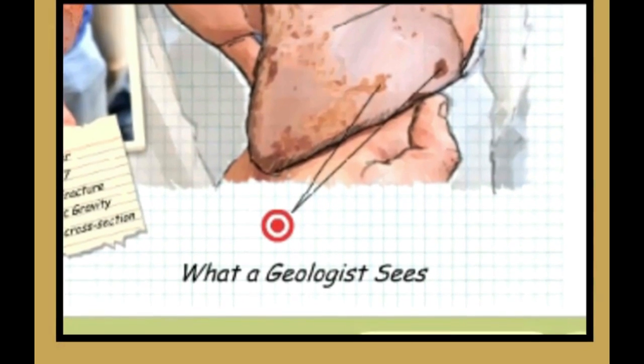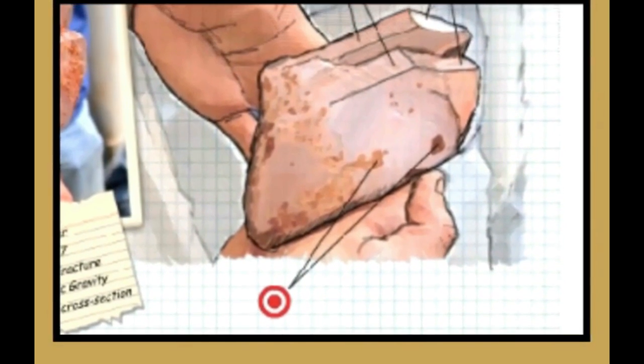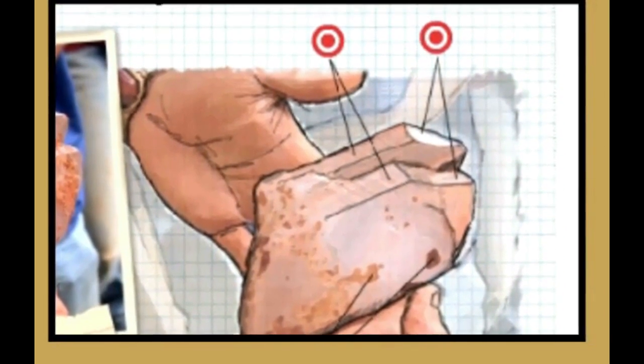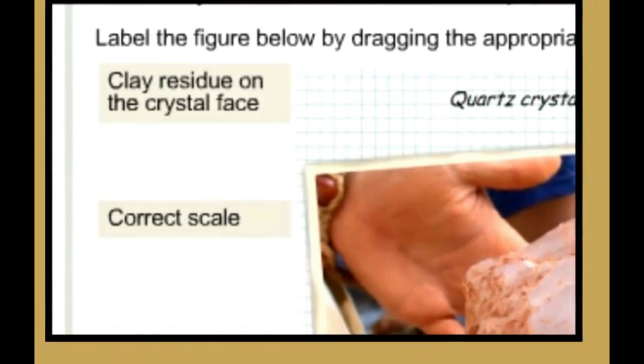Students are presented with an original image of a landscape or field sample they haven't seen before, and they are asked to draw inferences from what they've learned in class in order to label the figure.